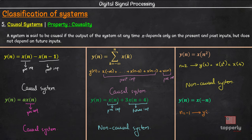We have y of minus 1 equal to x of minus of minus 1, which is equal to x of 1.